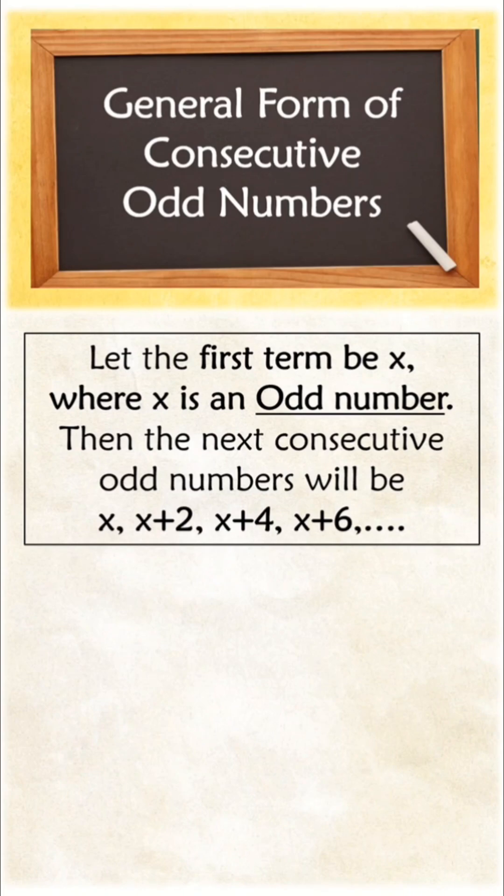But here, in even numbers the first term is 2, while in odd numbers the first term is x=1. So let us see an example.